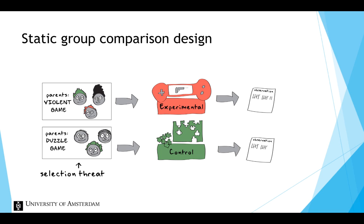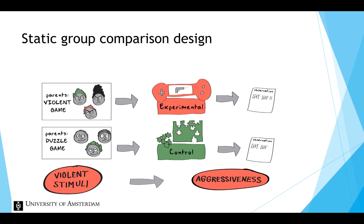The selection threat also makes the causal direction more ambiguous. What if more permissive parents with more aggressive children selected the violent video game, showing a higher aggressiveness to start with? Did violent stimuli cause aggression, or did permissiveness and aggression lead to the selection of violence?